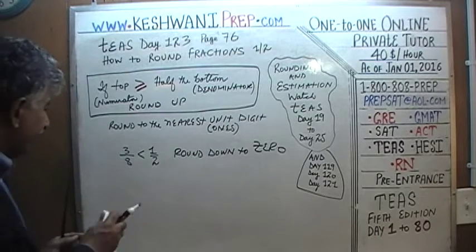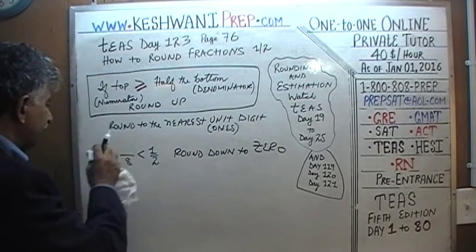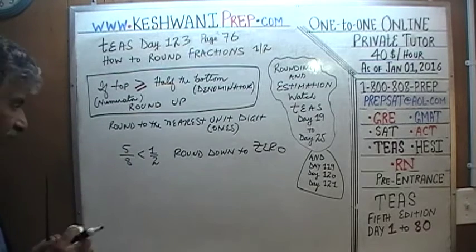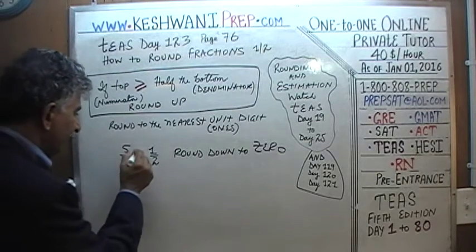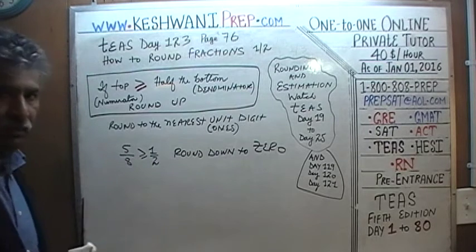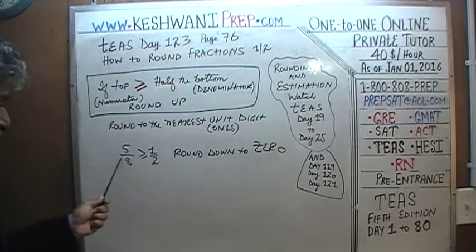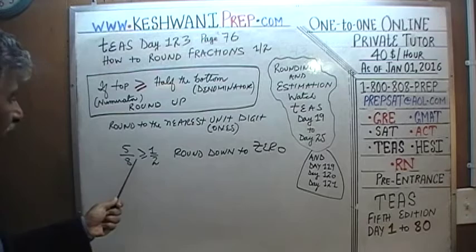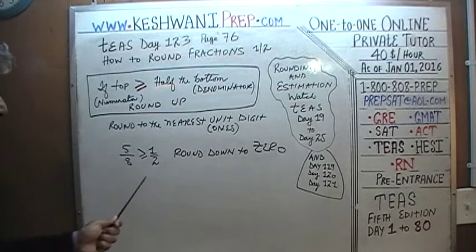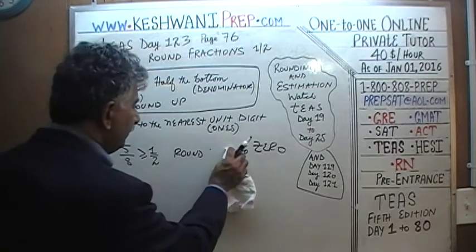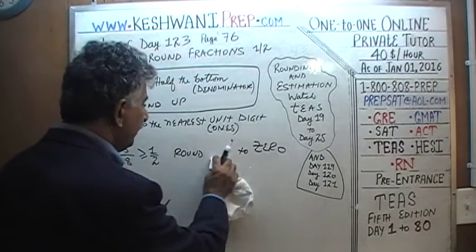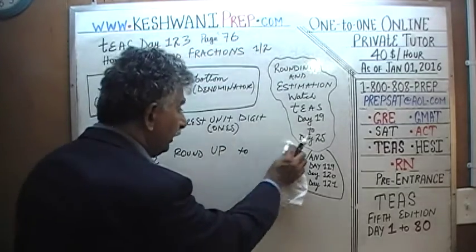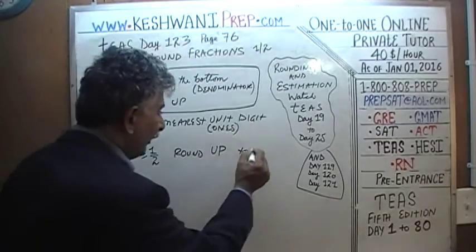What if instead of 3/8 it had been 5/8? Well, 5/8 is indeed greater than or equal to half — we know 5/8 is more than half. We have to include the 'equal to' part of the rule as well. In this case, we have to round it up. The nearest unit digit to 5/8 is 1.